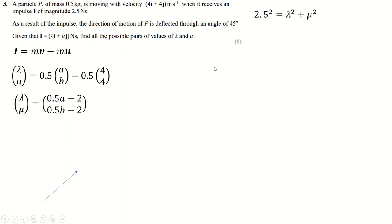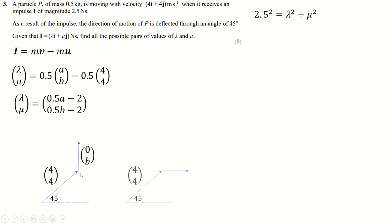The key part is drawing the picture. The initial velocity is (4, 4), which is 45 degrees. The particle is deflected through 45 degrees, which could happen in one of two ways: deflected upward so it goes straight up, meaning the final vector is of the form (0, B); or deflected downward so it goes straight horizontal, meaning the final vector is of the form (A, 0).